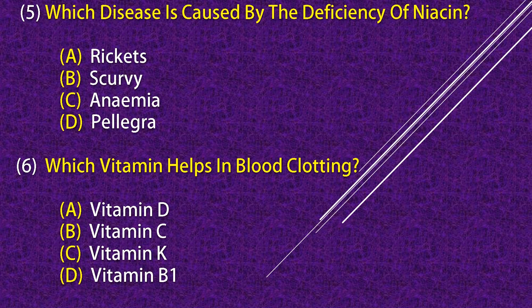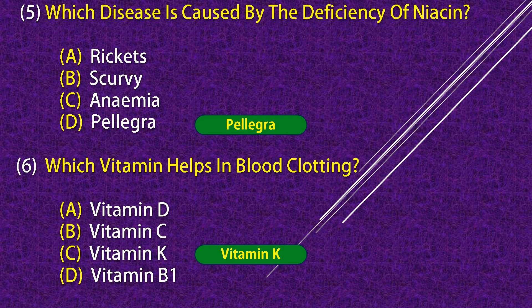Which disease is caused by the deficiency of niacin? Pellagra. Which vitamin helps in blood clotting quality? Vitamin K.